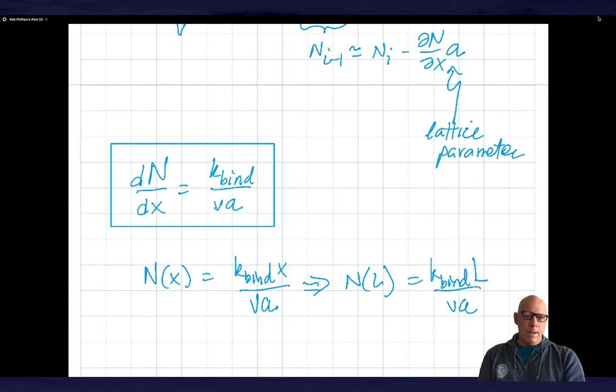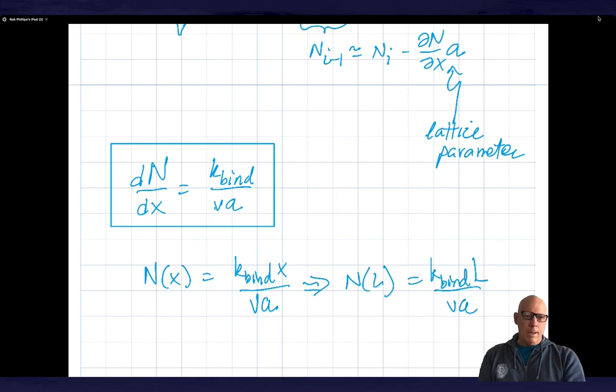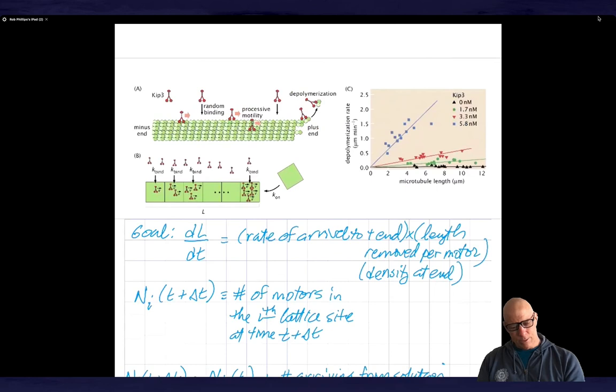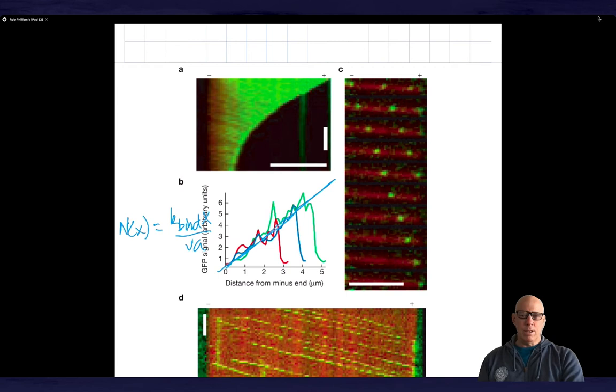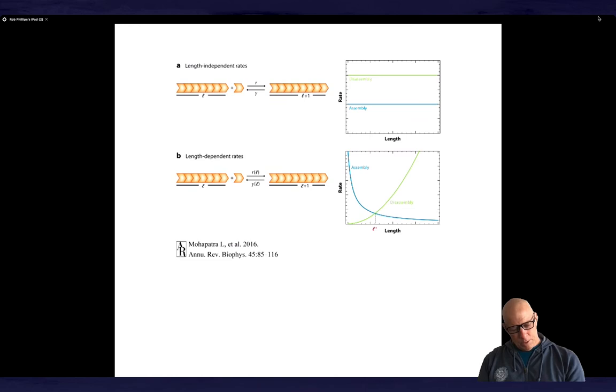So what have we accomplished? First of all, we're now ready to go back to this experiment because we just said that n of x is equal to k_bind x over v a. In other words, we actually have a prediction about the slope of this line, which is that it's k_bind over v a. So I'll come back to that maybe in a little bit. So that's the first thing that we can say.